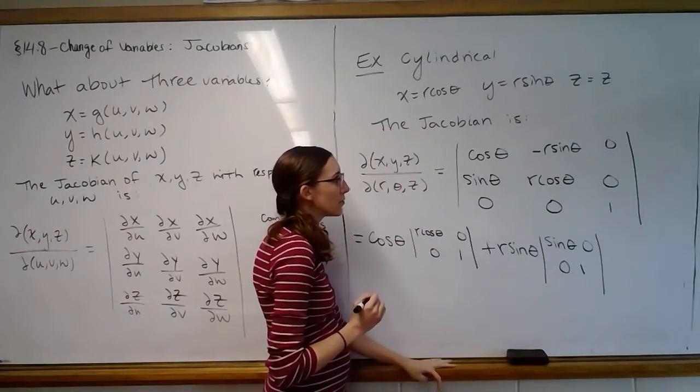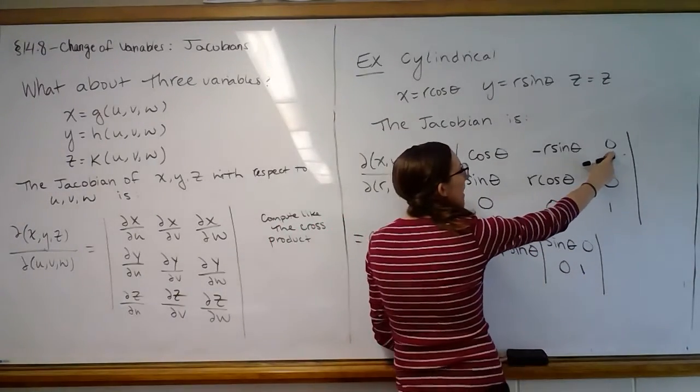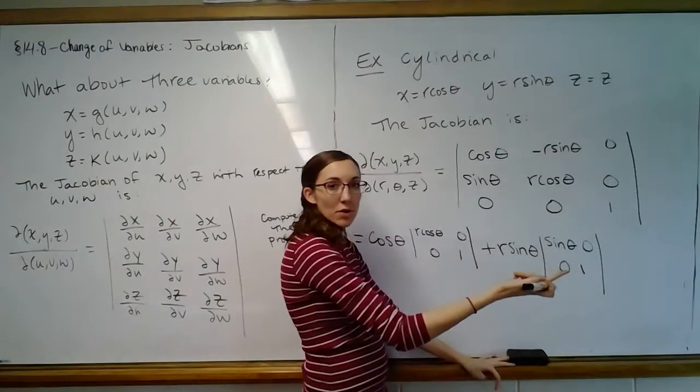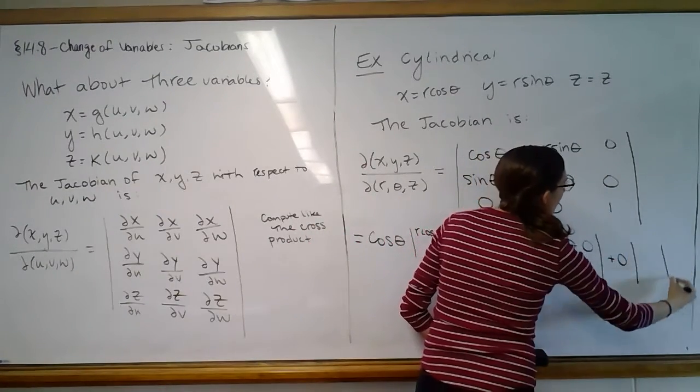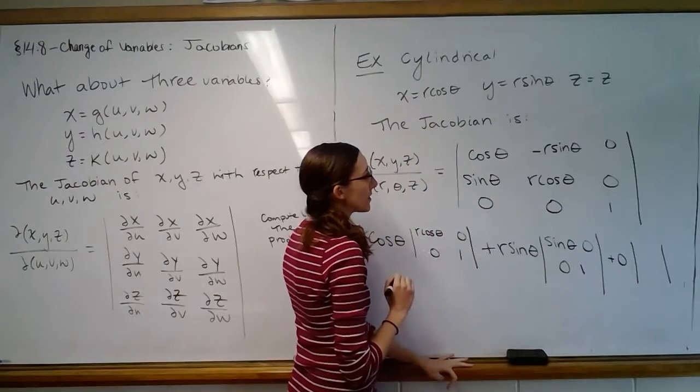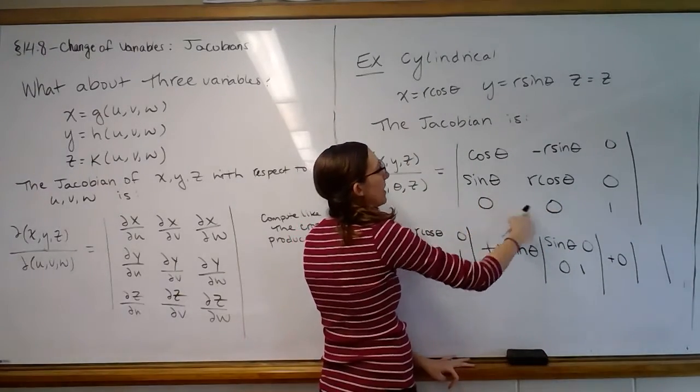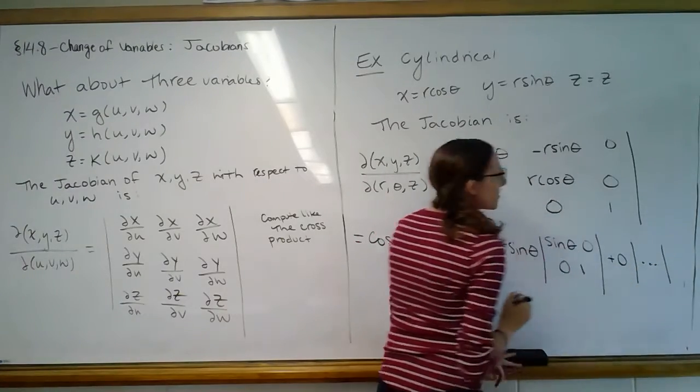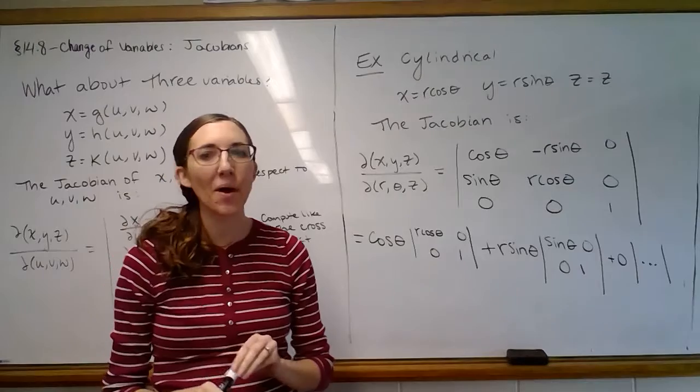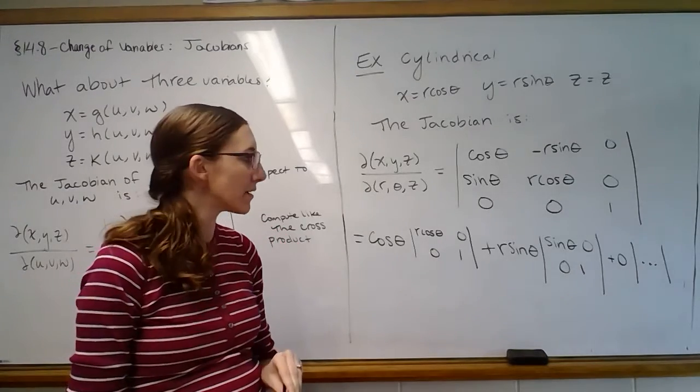And then in the last one, we're going to have the zero. So we'll have plus zero times a little determinant. But really, it doesn't matter what's in that determinant, because we're going to multiply it by zero anyway. So it's just going to go to zero.